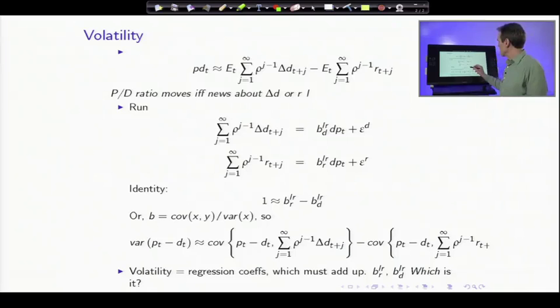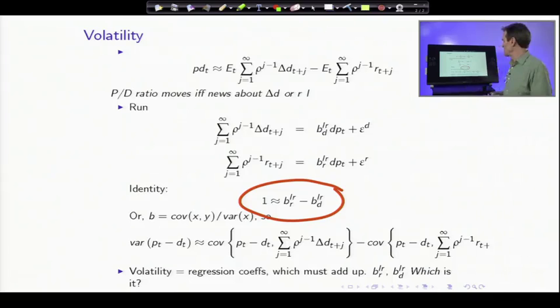Those regression coefficients are a decomposition of variance. They add up to 100% and they tell us how much of the variance of dividend yields comes from expected return variation and how much to expected dividend growth variation. It must be one or two. So there we have it. We've linked up dividend growth forecasts, return forecasts, and volatility.